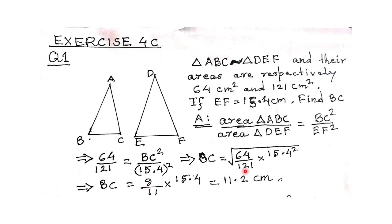BC = √(64 × 15.4² / 121). The square root of 64 is 8, square root of 121 is 11, and square root of 15.4² is 15.4. Solving this gives BC = 11.2 cm. Very simple question.